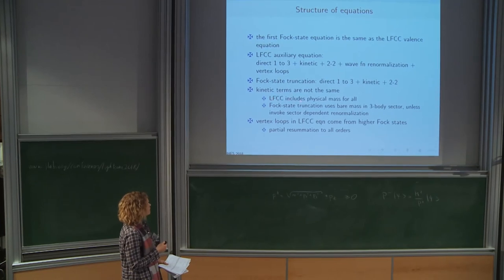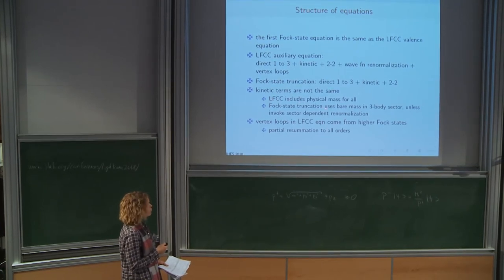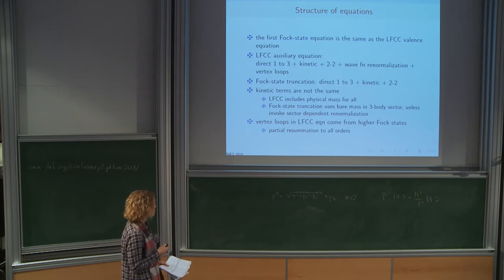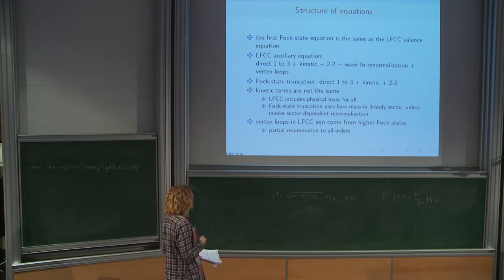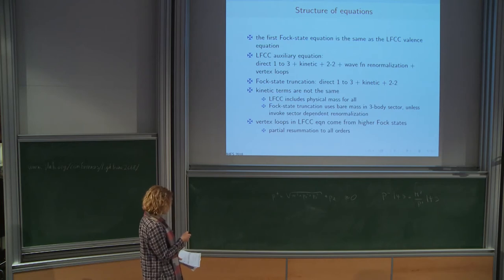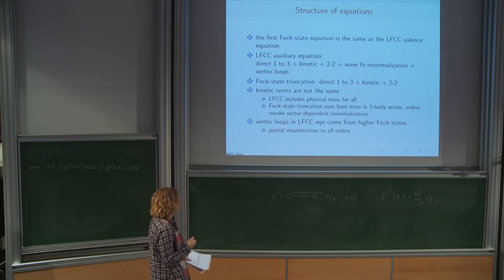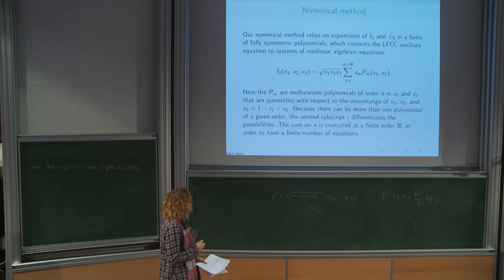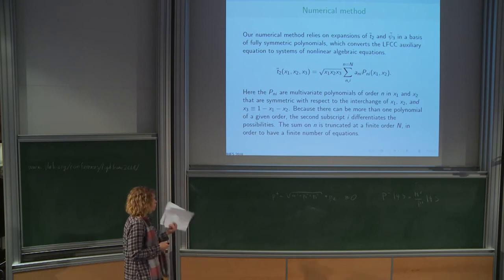Summary for LFCC at this point: the model is relatively simple but requires numerical techniques. In comparison with Fock state truncation, it introduces physical mass for kinetic energy terms without using sector-dependent renormalization, and is doable using symmetrical polynomials. Low Fock state truncation to three particles is definitely doing worse. Now, what about the extended Fock state expansion? For the odd sector we go up to the ninth state, and for the even sector up to the eighth state.